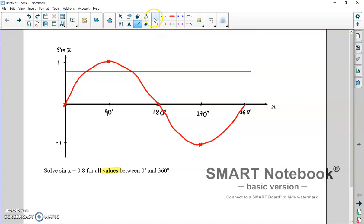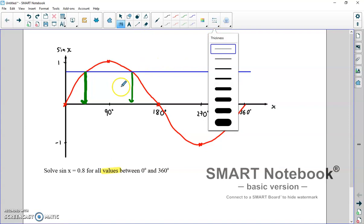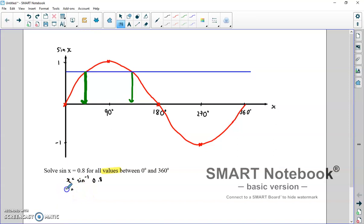And looking where those lines meet, so where our graphs meet. We've got one solution between 0 and 90. And we've got another solution there. So to solve this, we're going to need to get our calculators out. Sine minus 1, because we're finding an angle, of 0.8. And the calculator will tell us that to the nearest degree, x is 53 degrees, which is great. There's our first solution, 53 degrees.